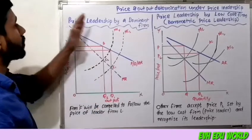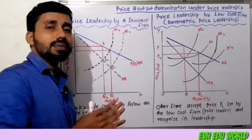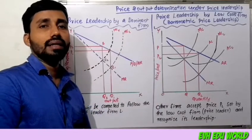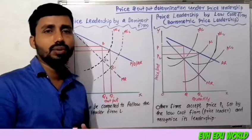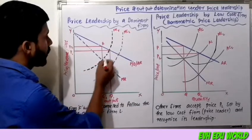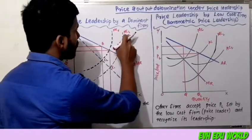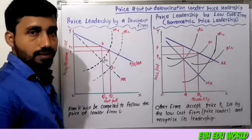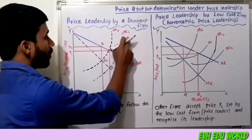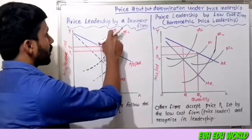Price leadership by a dominant firm involves two groups: one large firm as the leader, and followers. Here you can see the marginal cost curve of the followers. This is the dominant firm. You can observe the marginal cost of followers plotted on the diagram.